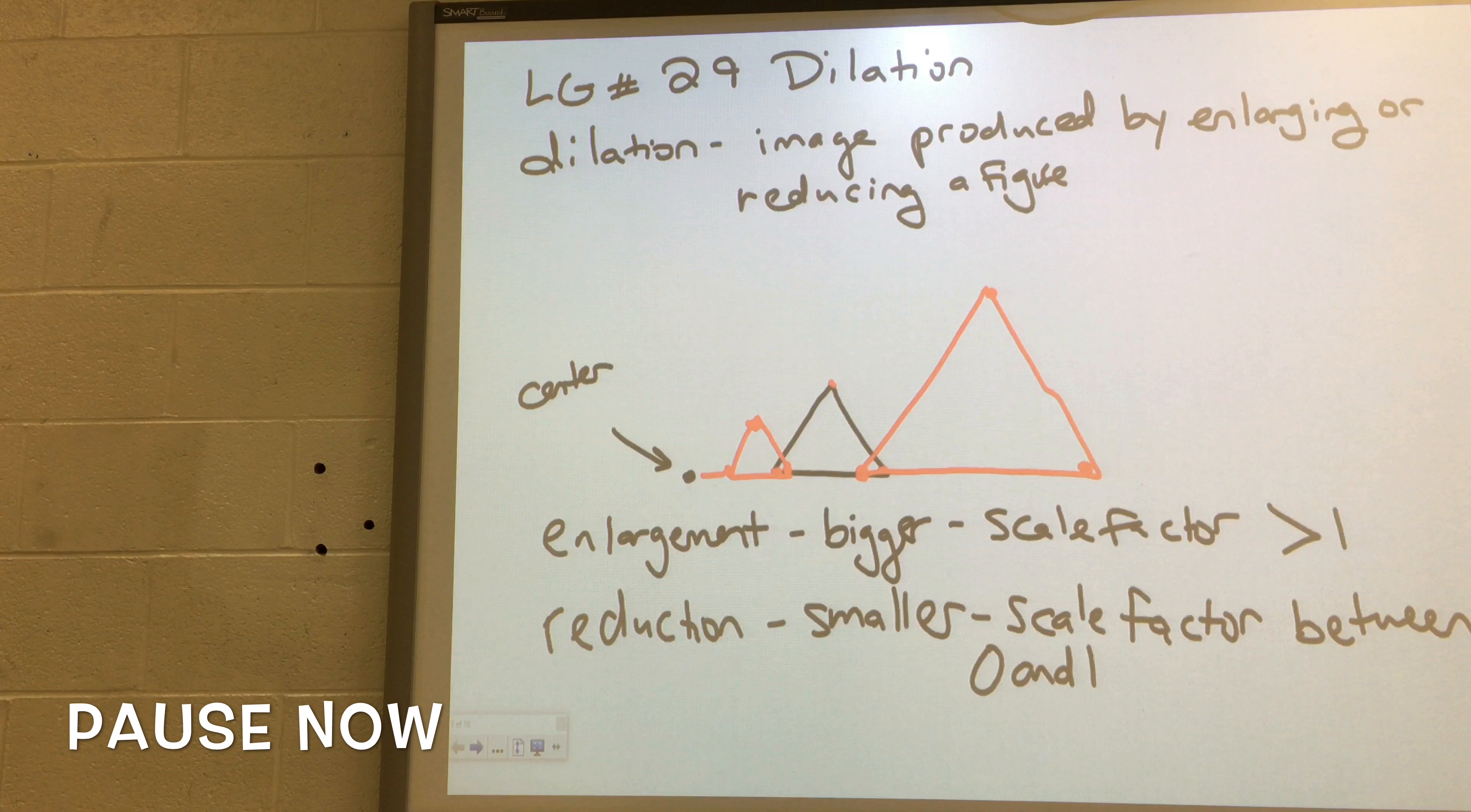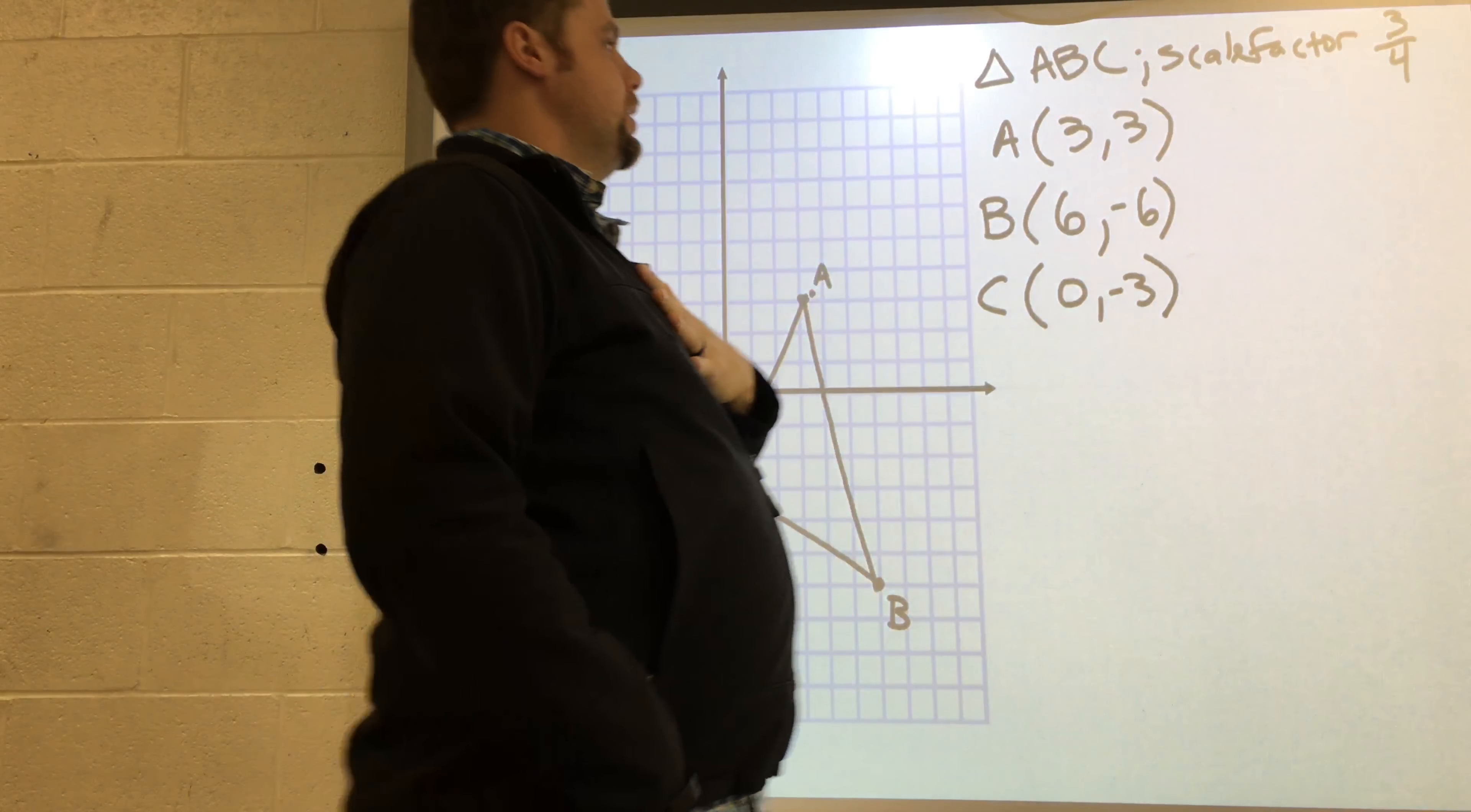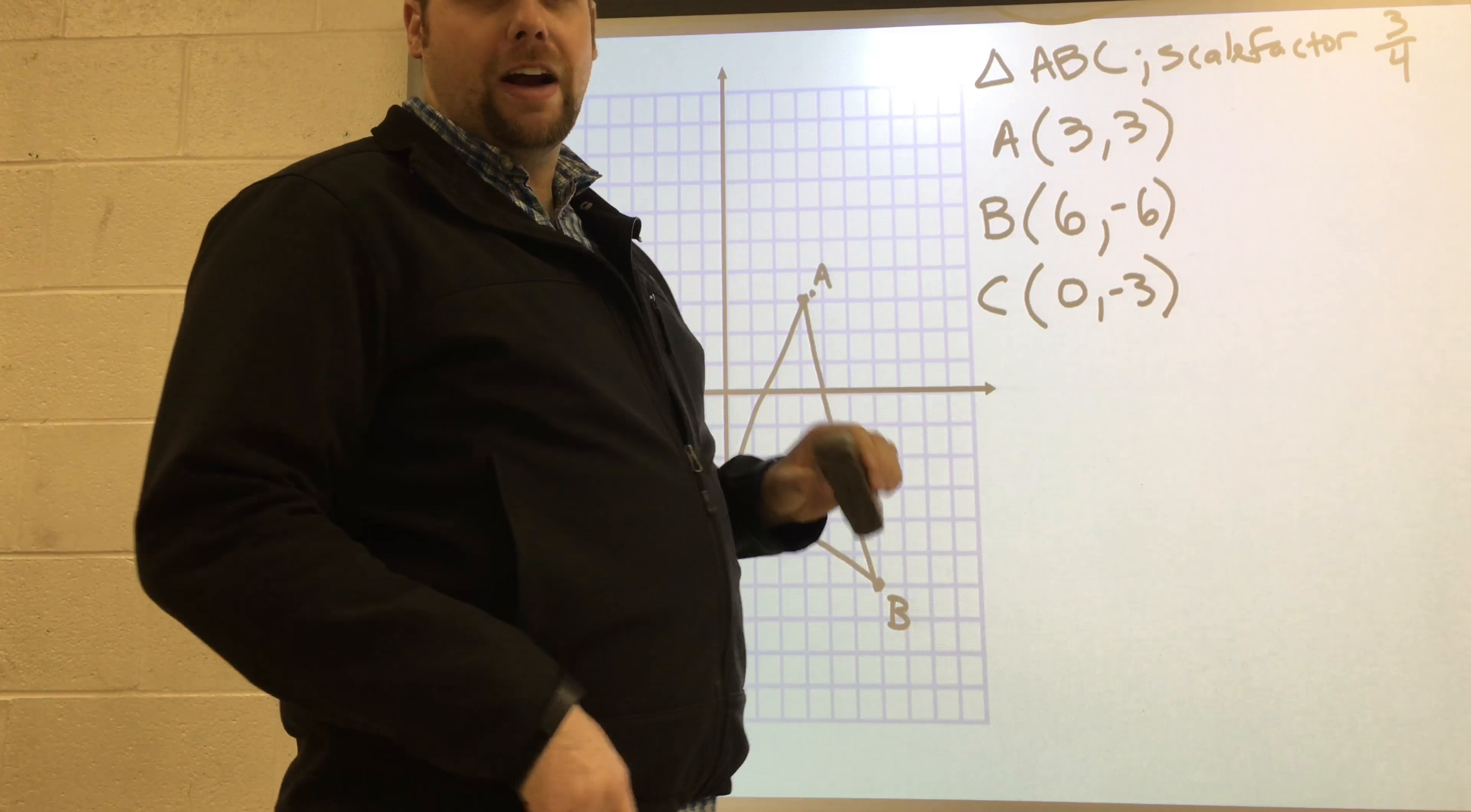So for this next example here we have triangle ABC. It's graphed and labeled and the points are listed here. Now I want to come up with a new graph that has the scale factor of three-fourths. You know what? Let's change that. I want to change it so it has a scale factor of four-thirds.